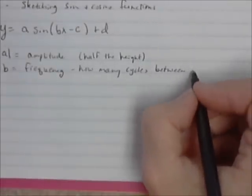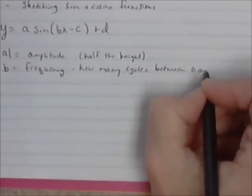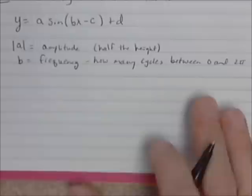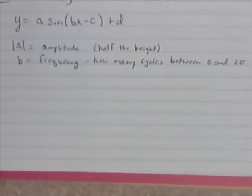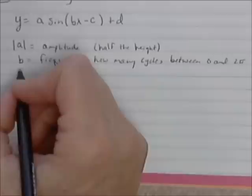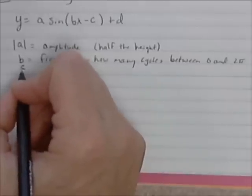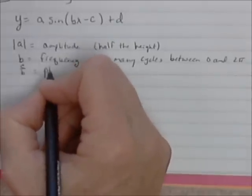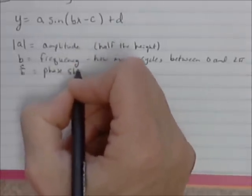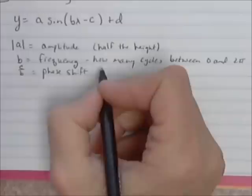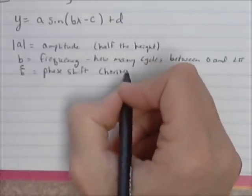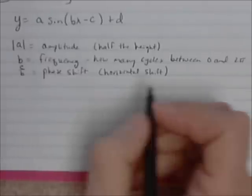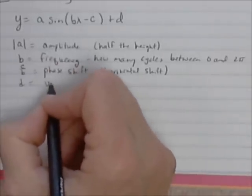Two pi is at 360 degrees. All of the work we're going to be doing with trig will be in radians, so we'll be talking in terms of pi usually. C over b is equal to the phase shift — a phase shift is a horizontal shift. And d is equal to the vertical shift.